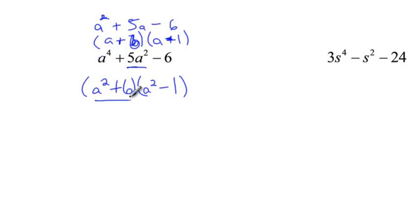Now, can I factor a squared plus 6 at all? No. How about a squared minus 1? Well, yeah, a squared and 1 are both perfect squares, so I'm going to factor it to a squared plus 6, and then a plus 1, a minus 1. And that's my completely factored form.